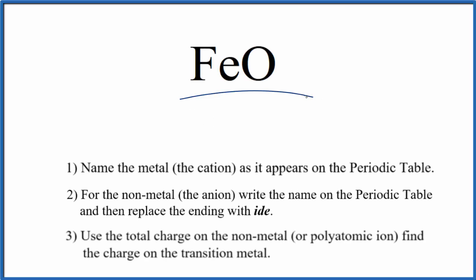To write the name for FeO, the first thing we need to realize is that iron is a transition metal and oxygen is a nonmetal. So we have a metal-nonmetal compound, and we're going to use these rules to write the name for FeO.